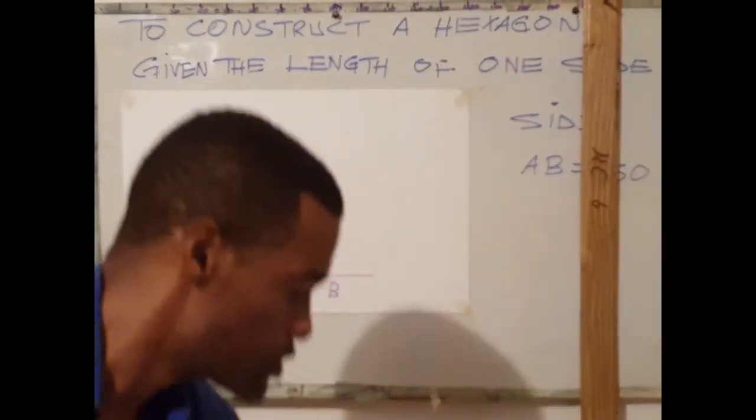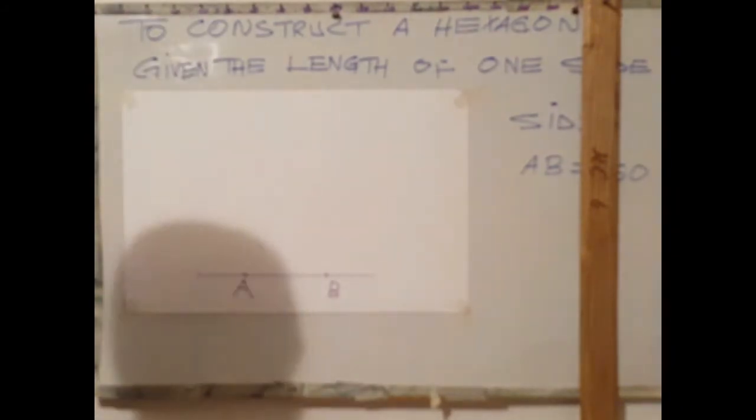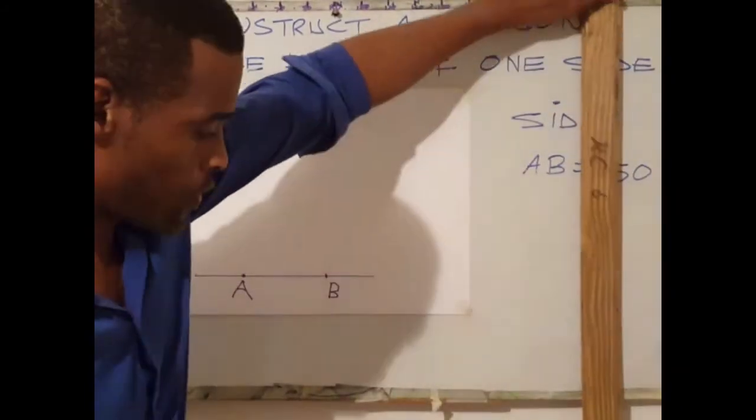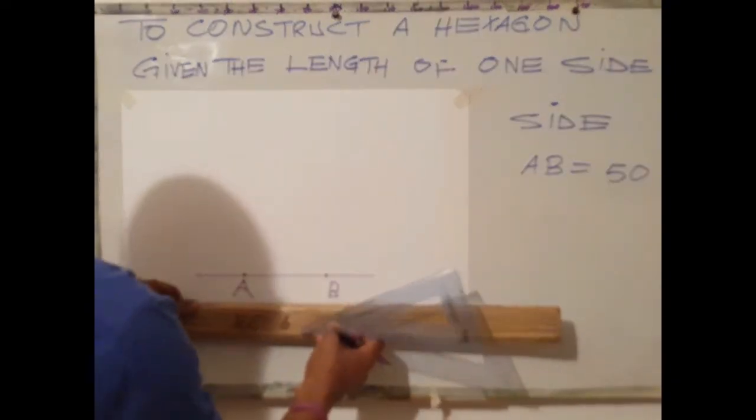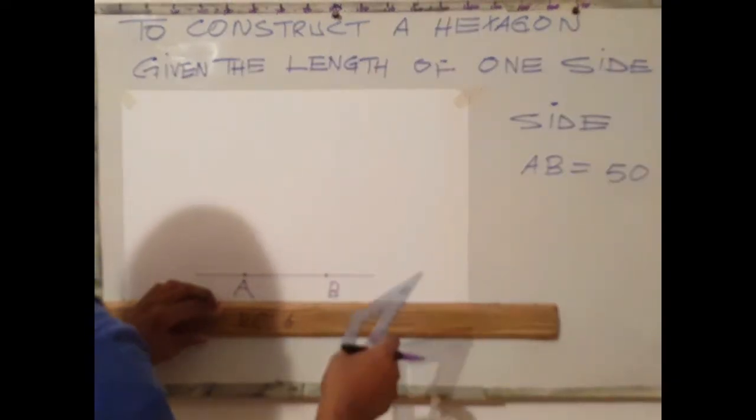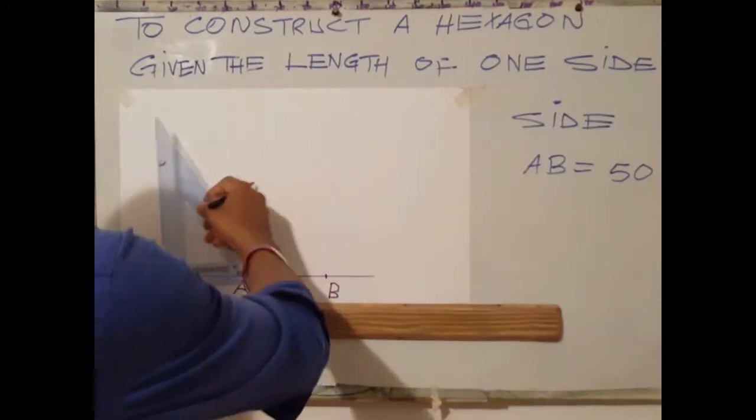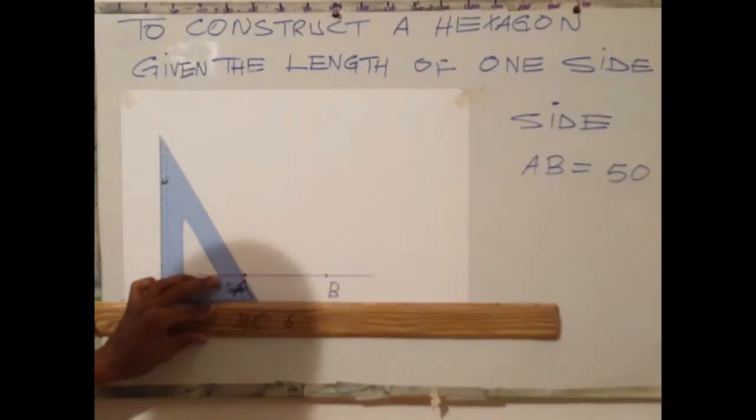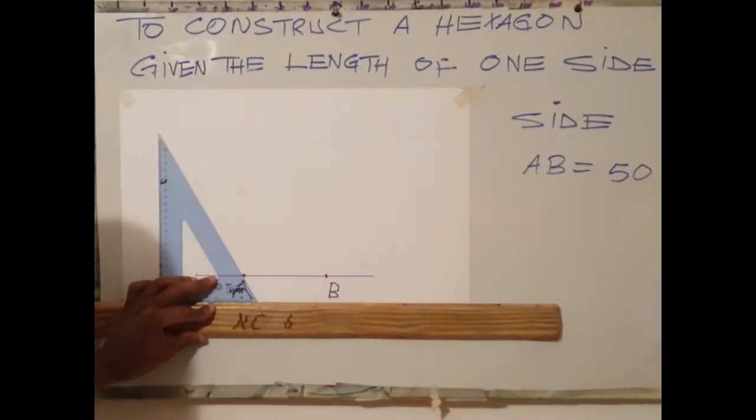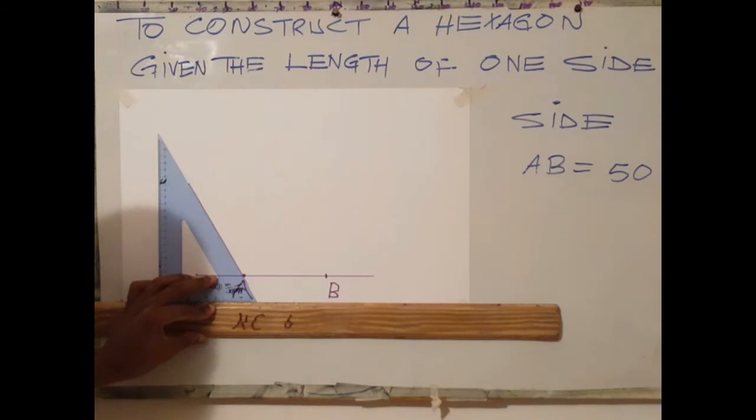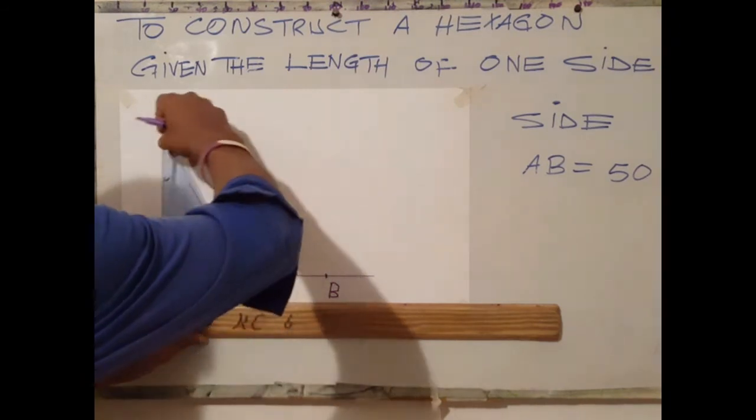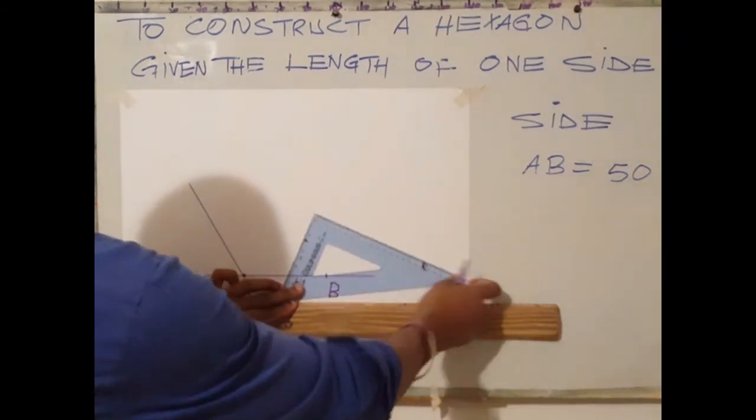The next step is to use your 60-30 set square. So we set your set square like this. And we draw a construction line here. Rotate your set square like this.